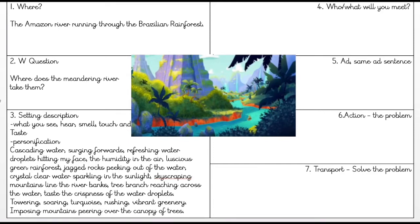Today we are going to think about who and what we will meet, the ad-same-ad sentence, the action — so what the problem was — and then the transport, so how to solve the problem. Number four is who and what will we meet.